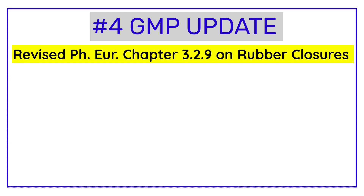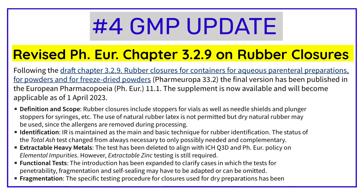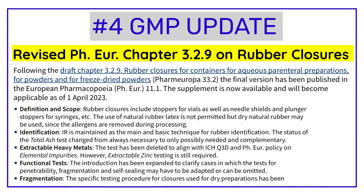GMP Update Number Four is for pharma professionals working in packing material quality control. The European Pharmacopoeia has revised pharmacopoeial chapter number 3.2.9, titled 'Rubber Closers for Containers of Aqueous Parenteral Preparations.' Under definitions and scope, it is mentioned that rubber closers include stoppers for vials as well as needle shields and plunger stoppers for syringes. The use of natural rubber latex is not permitted, but dry natural rubber may be used since allergens are removed during processing.